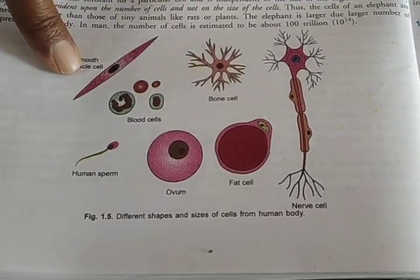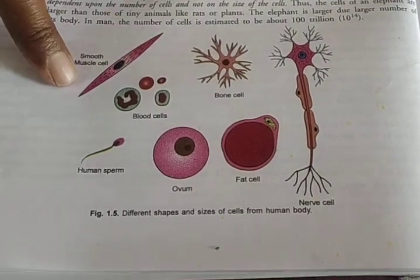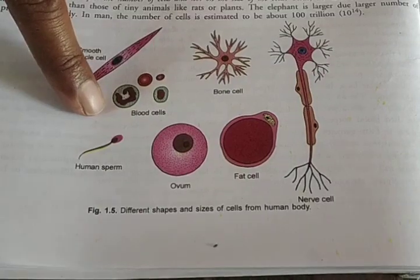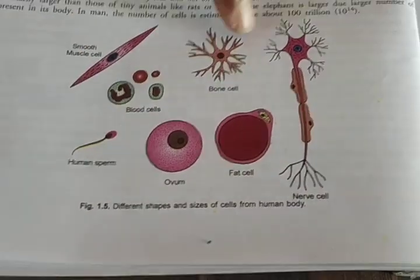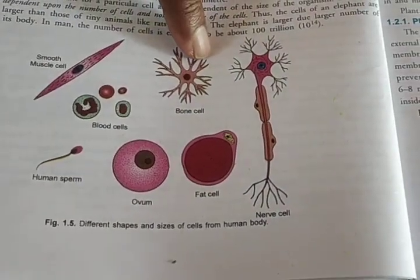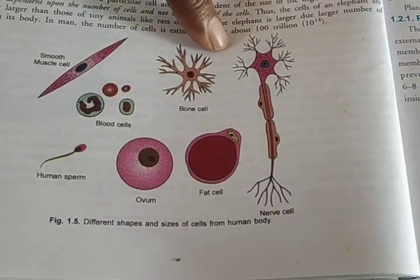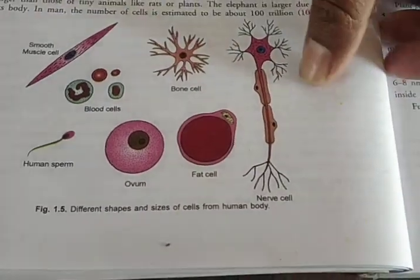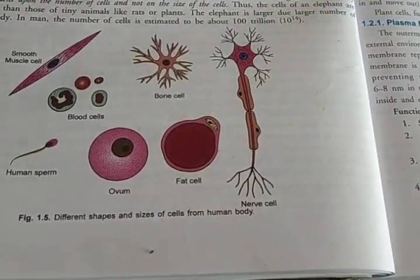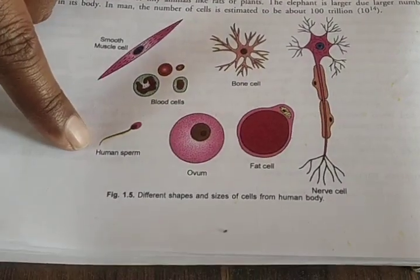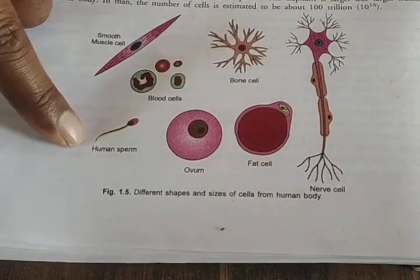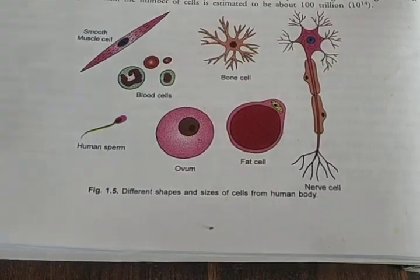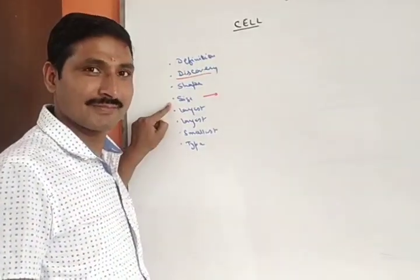You can see here is the muscle cell which is spindle shaped. These are oval cells which are RBC or blood cells. Some irregular cells of our bones are there. Even our WBC are also irregular in shape. This is a nerve cell which is tree branch like. Then human sperm is tailed structure that is tadpole like, and fat cells and ovum cells are of different different shapes.